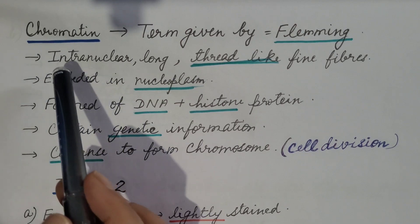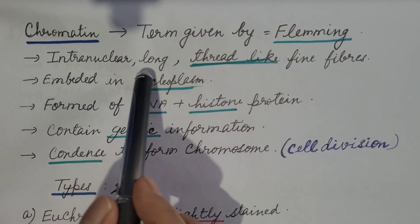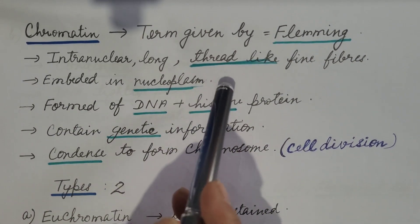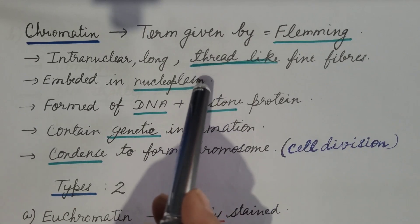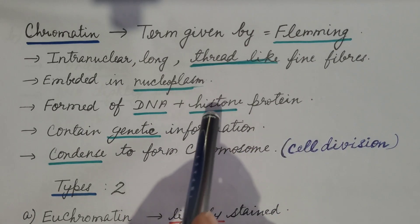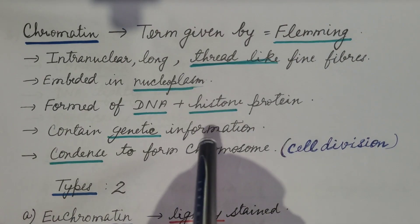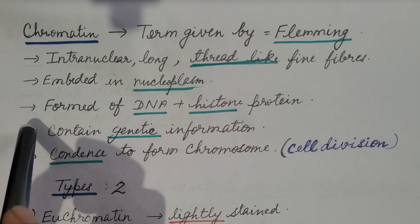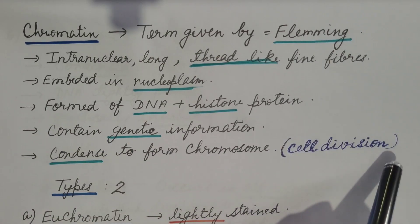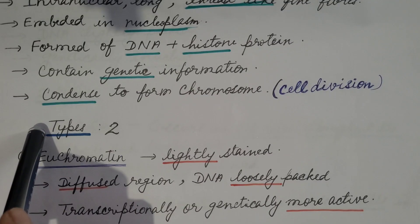The term 'chromatin' was given by Fleming. It refers to intranuclear, long thread-like fine fibers embedded in the nucleoplasm, present in the nucleus of eukaryotic cells. Chromatin is formed of DNA plus histone proteins, so it is a nucleoprotein. It contains genetic information and condenses to form chromosomes during cell division. Chromatin is of two types.